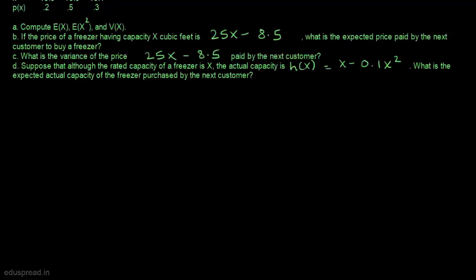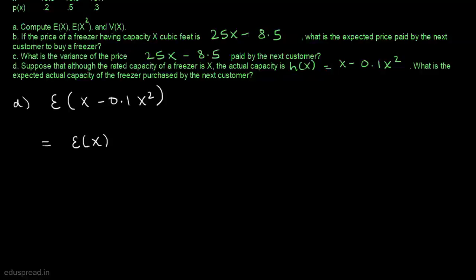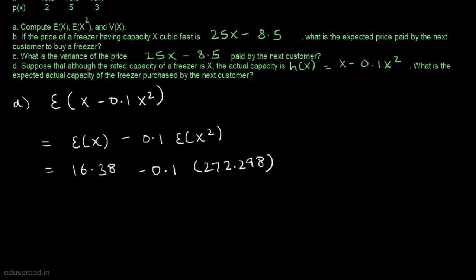In part D, although the rated capacity of a freezer is X, the actual capacity is H(X) = X − 0.1X². We need to find the expected actual capacity. Using linearity of expectation, E(X − 0.1X²) = E(X) − 0.1·E(X²) = 16.38 − 0.1×272.298 = 13.657. This is the final answer.